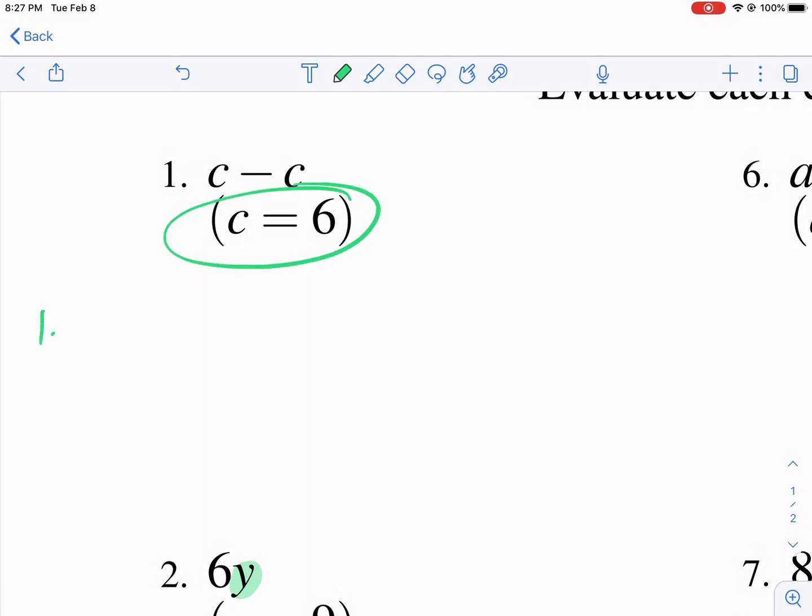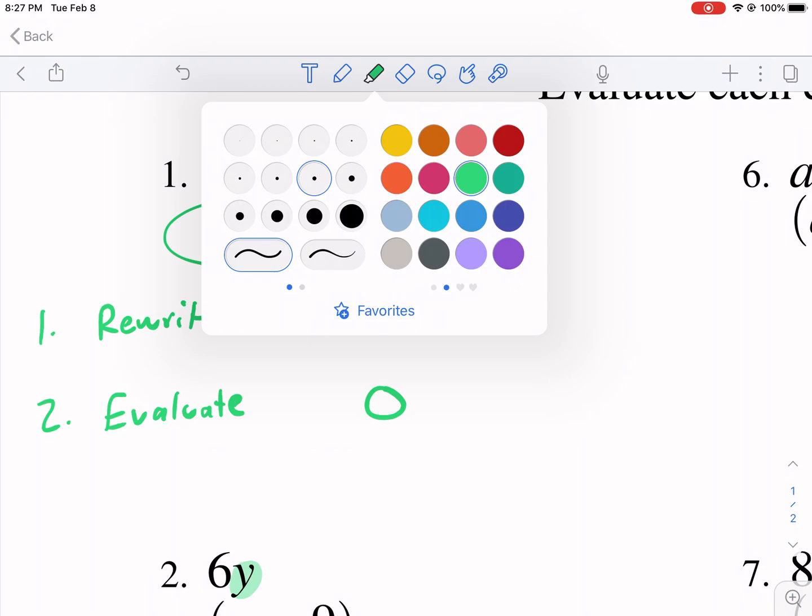What we need to do, first step one is rewrite. So we are going to rewrite. Instead of writing c we know c is equal to 6. We're going to say 6 minus 6. And the second step is evaluate. That means find the answer. So this is just 6 minus 6 and that's equal to 0. And there's my answer. Simple as that.